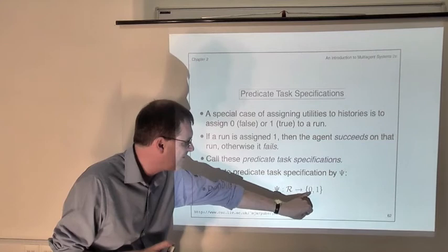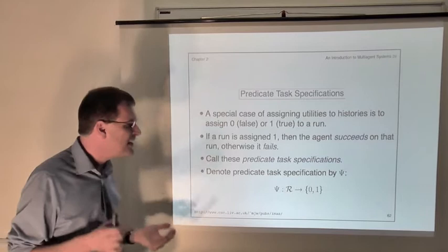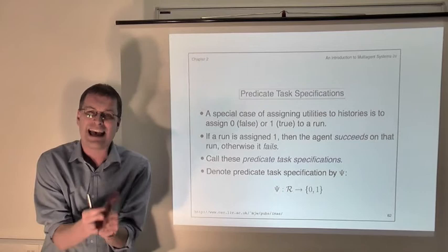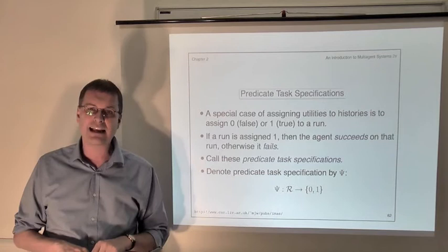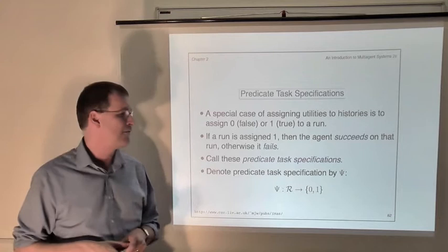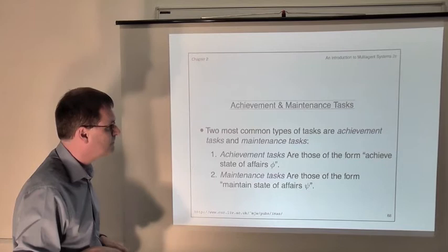We can naturally think of them as being predicates when we value falsity at 0 and truth at 1. So given one of these task specifications, what we want an agent to do is just generate runs that get the value 1. We think about an agent winning if it's guaranteed to bring about runs that have value 1 — the agent is playing a game against its environment and it wins if it guarantees to only bring about runs that have value 1, according to this predicate task specification psi.